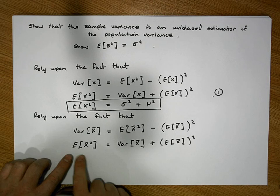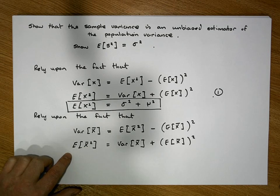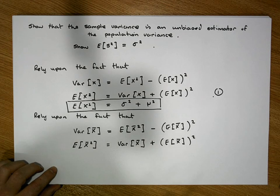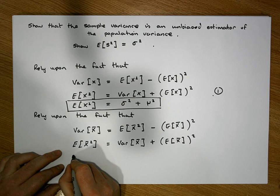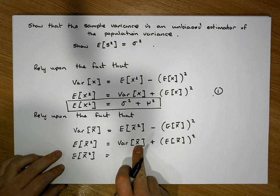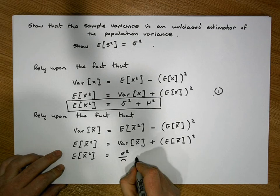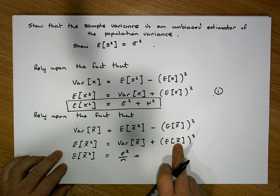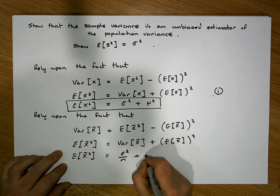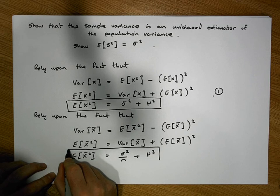The second identity we require is that the expectation of the square of X-bar equals the variance of X-bar plus the square of the expected value of X-bar. We know the expected value of X-bar squared equals the variance of the sampling distribution of the mean — which we calculated to be sigma squared over n — plus the expectation of the sampling distribution of the mean, which has expected value mu, so that's plus mu squared. This is our second important identity.